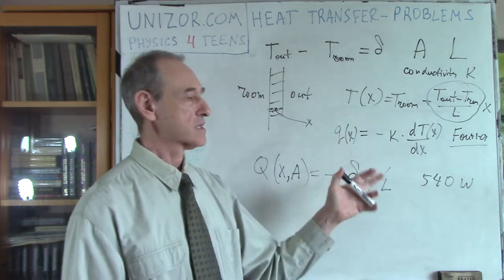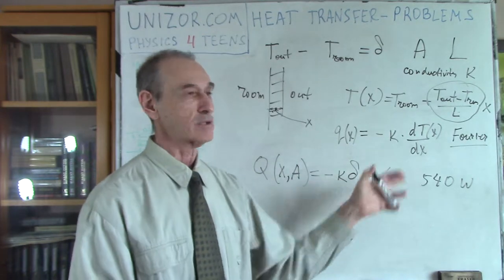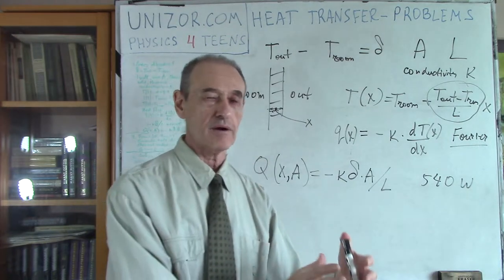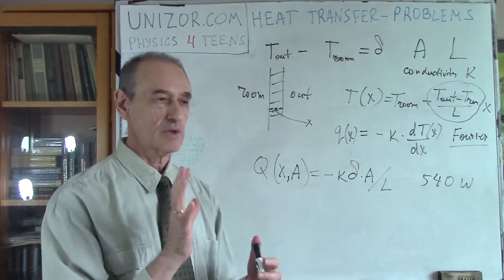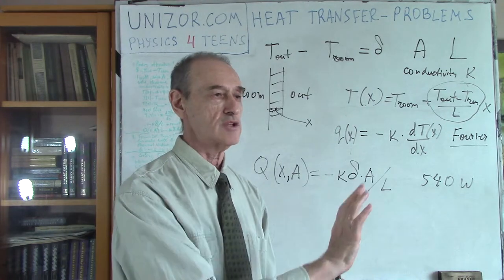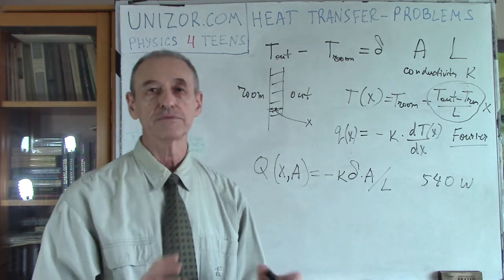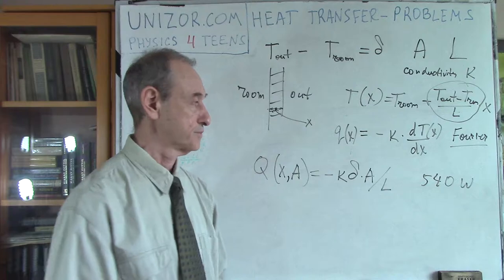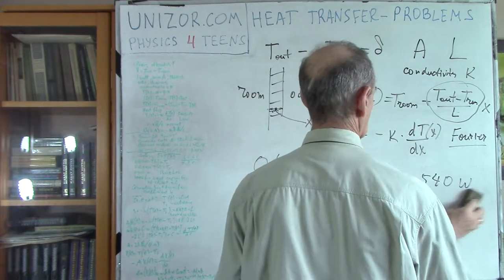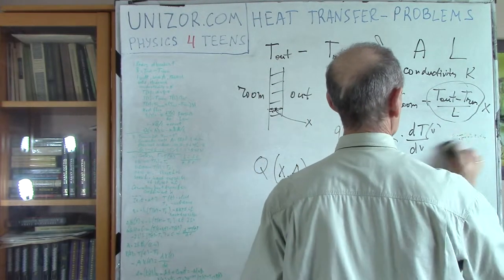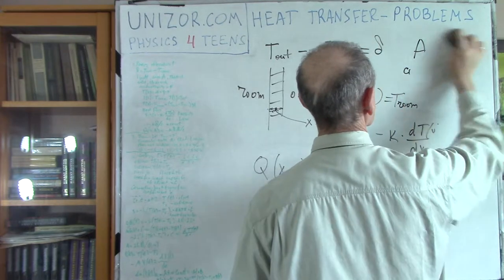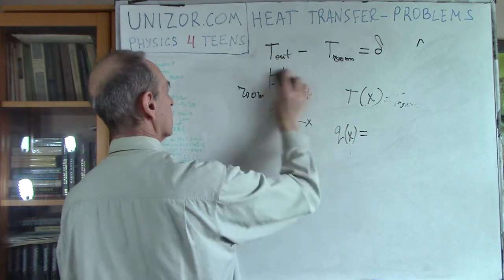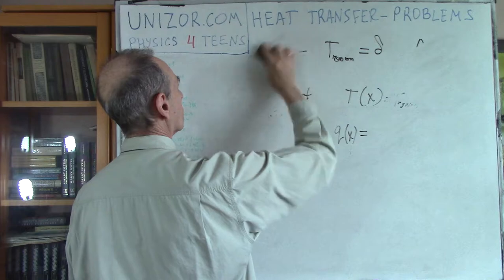The approach is to separate your bigger problem into a set of smaller problems: window is one thing, wall is another, layer of insulation is the third, and so on. You can calculate each separately and combine to find the total heat needed to warm the room. That is my first problem. Problem number two was the same with concrete calculations, which I've skipped. Now I'll go to my third problem.